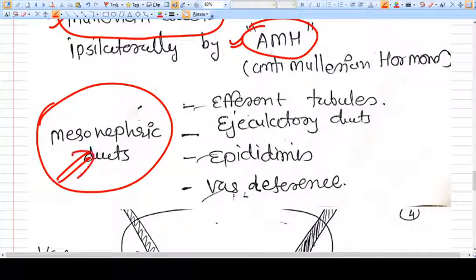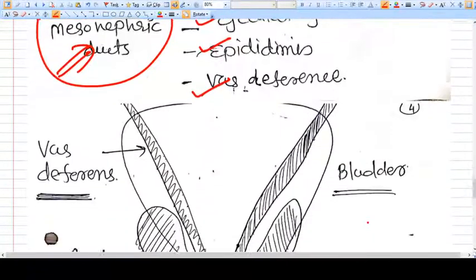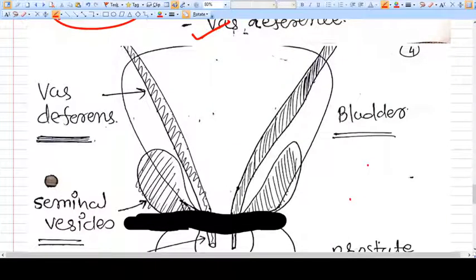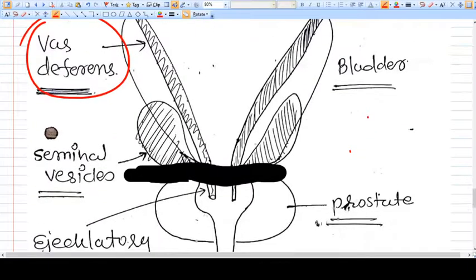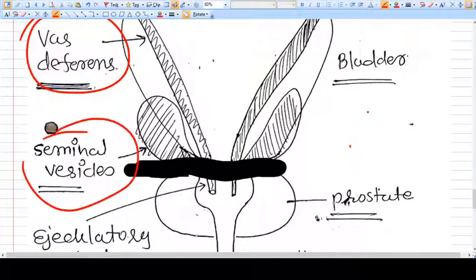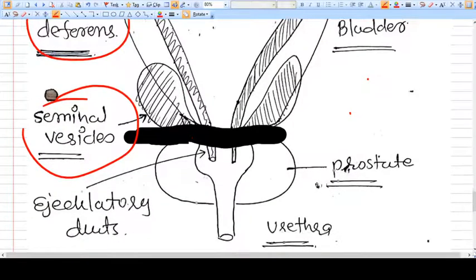Now let's see what this mesonephric duct makes. Up to rete testis it was developed from the gonadal ridge, but from the rete testis, everything will be developed by mesonephric duct, like efferent tubules, epididymis, vas deferens, and ejaculatory ducts. If you see the base of the bladder, these are the vas deferens. At the base of the bladder we have the seminal vesicle, which is a specific gland that secretes into vas deferens and makes ejaculatory ducts.